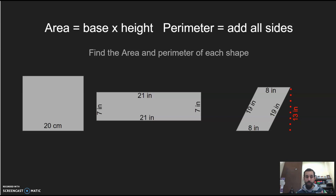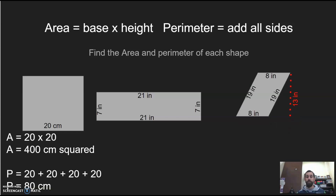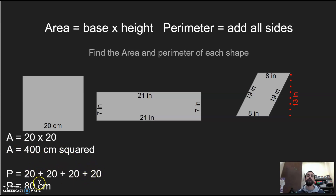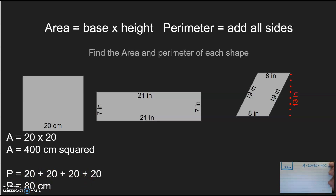Here's the correct answer for the square: it was 20 by 20, so 20 × 20 to find the area of 400 centimeters squared, and then 20 + 20 + 20 + 20 to get 80 centimeters as your perimeter.